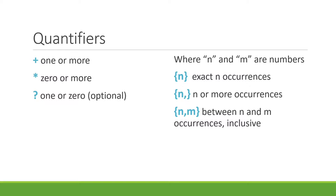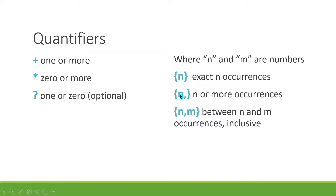These are the quantifiers we'll be talking about in this video. We can specify one or more of something, zero or more - which basically means it's optional and if it's there it can be any number. We can use what I call the optional operator, which means it's there or it's not there. Then you can specify exact occurrences: exactly N where N is an integer greater than zero, like exactly five digits. Or you can say N or more, or between N and M inclusive - so one, two, three, four, or five occurrences of a token.